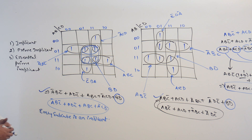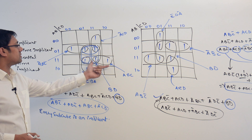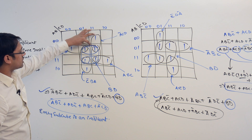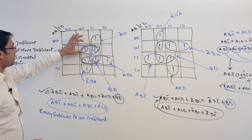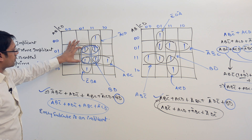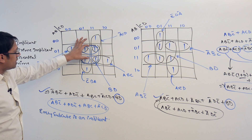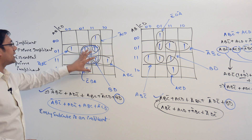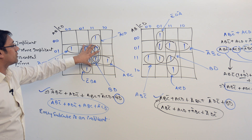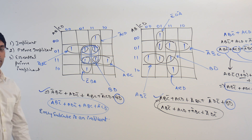For example, this is an implicant, this is an implicant, this is an implicant, this is an implicant. Even the subcube of size 2 is an implicant, subcube of size 2 is an implicant, as well as this bigger subcube which is of size 4 — it is also an implicant.